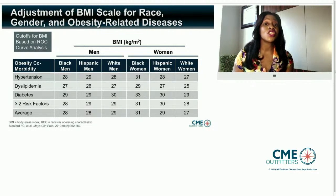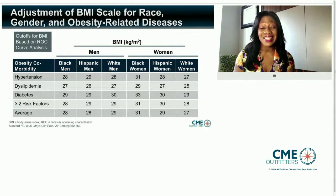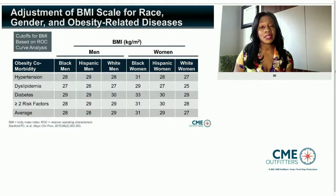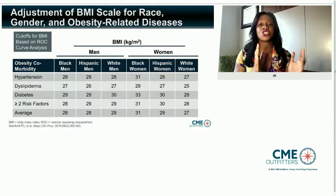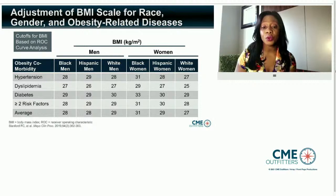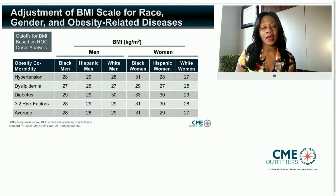I went back to redraw the tables in 2019 and published this study in the Mayo Clinic Proceedings, using the current NHANES — the National Health and Nutrition Examination Survey data — to discern what the BMI cutoff should be based upon obesity-related diseases, particularly hypertension, dyslipidemia, diabetes, and greater than two of those risk factors. On the left side of the slide, looking at men almost universally regardless of racial ethnic group in the United States, the BMI curve shifts below 30, with an exception for white men with diabetes.